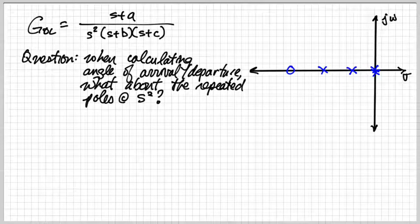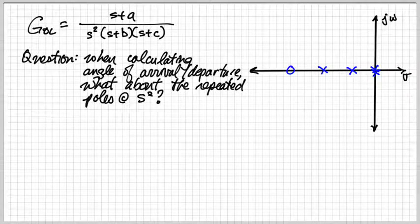So the question, especially if you're doing this as a root locus problem where you'd like to understand the departure angles, is what do you do about those repeated poles at s squared?